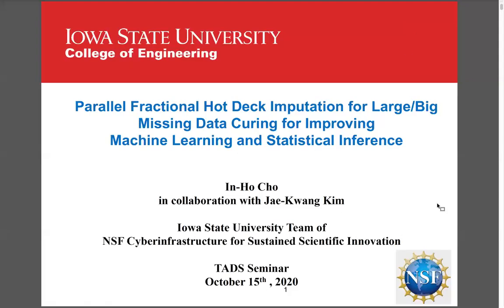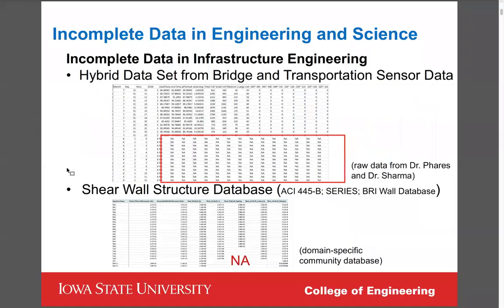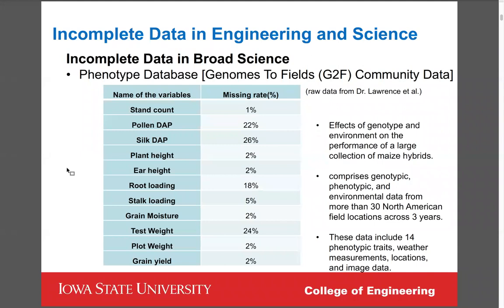Today I want to talk about parallel fractional hot deck imputation for large or big missing data curing, for improving machine learning and statistical inference. Incomplete data is everywhere — not an exception in engineering. Engineers have lots of data from sensors on bridges, transportation systems, or community-level databases, and they always have missing data issues due to data inconsistency, hardware failure, or human error. This is also found in broad science domains, such as phenotype databases, where intrinsic missing data can be as high as 26 percent.